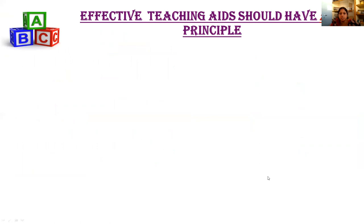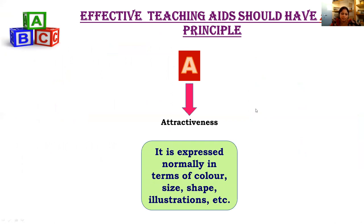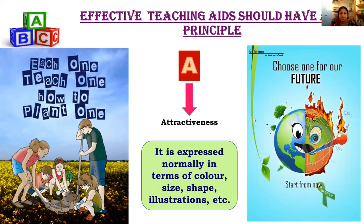An effective teaching aid should follow certain principles, referred to in short as the ABC principle. A stands for attractiveness. Whatever visual aid we prepare must be attractive. Attractiveness is expressed in terms of the colors used, the size, the shape, and how we illustrate the information. For example, the two posters shown here use only two or three colors, a few sentences, and one or two pictures — making them immediately eye-catching and clearly conveying what is important.